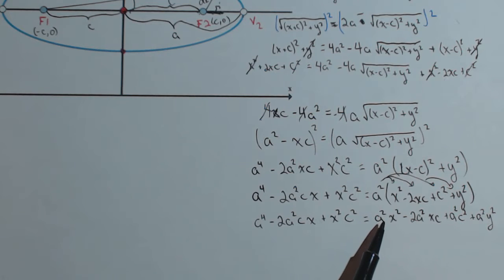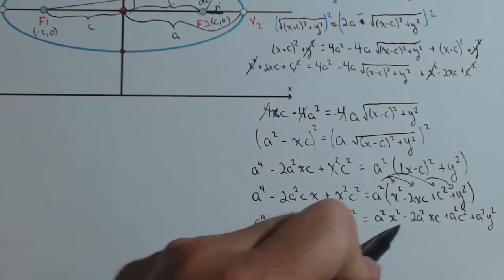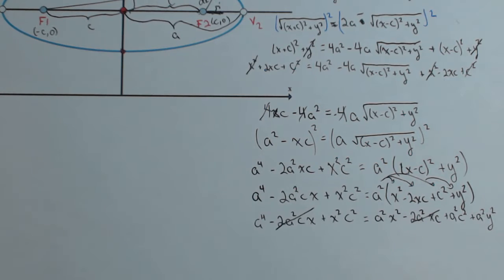So let's get these pieces organized. First off, notice I have a minus 2a squared cx and a minus 2a squared xc. Those are the same term. I could add that to both sides to get rid of it.